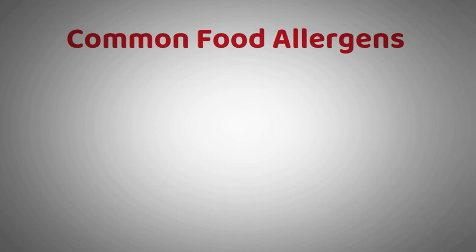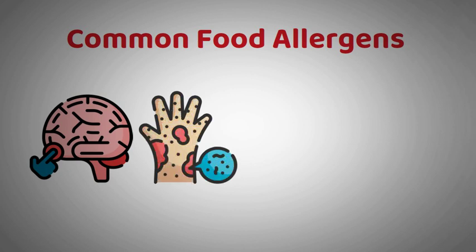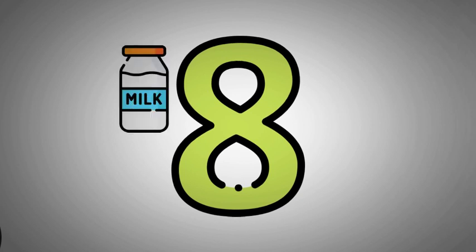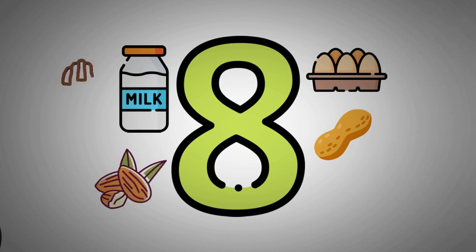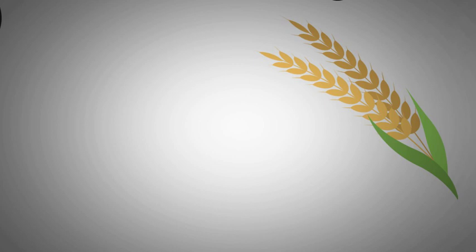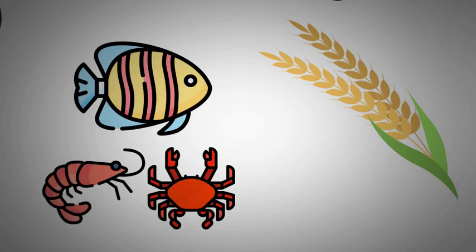Common food allergens: While any food can potentially trigger an allergy, certain foods are more likely to cause allergic reactions. These are often referred to as the big-eight allergens and include milk, eggs, peanuts, tree nuts like almonds, walnuts, and cashews, soy, wheat, fish, and shellfish such as shrimp, crab, and lobster.